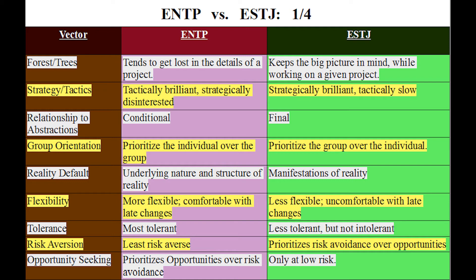Flexibility: ENTPs are more flexible and comfortable with late changes; ESTJs are less flexible and uncomfortable with late changes. Tolerance: ENTPs are more tolerant; ESTJs are less tolerant but not intolerant — they will embody whatever tolerance is the societal norm they grew up with. They embody the system, whatever it is — they're not non-conformists. Risk: ENTPs are counter-conformists. ESTJs are more risk-averse; ENTPs are the least risk-averse of all types except maybe ENFPs.